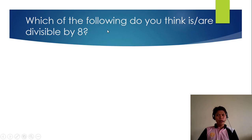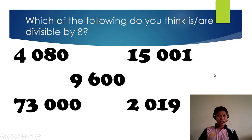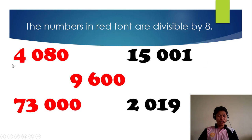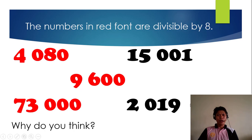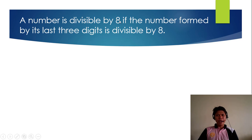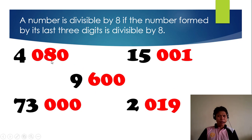Moving on to our next divisibility rule, we have the rule for 8. Which of the following do you think is or are divisible by 8? Pick the numbers. The numbers in red font are divisible by 8: 4,080, 9,600, and 73,000. While the others — 15,001 and 2,019 — are not. A number is divisible by 8 if the number formed by the last 3 digits is divisible by 8. This time it's the last 3 digits: the ones, tens, and hundreds place. Let's discuss one by one.